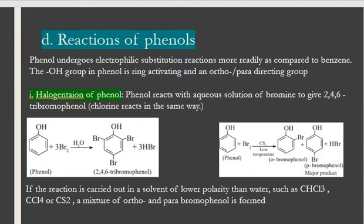The first reaction is halogenation of phenol. Phenol reacts with aqueous bromine solution to give 2,4,6-tribromophenol; chlorine also reacts the same way. Three bromine molecules react with phenol in aqueous solution; three hydrogen atoms from the 2, 4, and 6 positions on the benzene ring are removed forming HBr molecules, and three bromine atoms are attached at the 2, 4, 6 positions. If the reaction is carried out in a solvent of low polarity like carbon tetrachloride or chloroform, we get ortho-bromophenol and para-bromophenol along with HBr, with para-bromophenol being the major product.